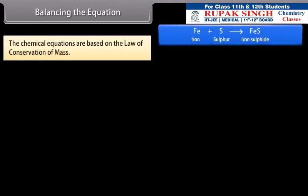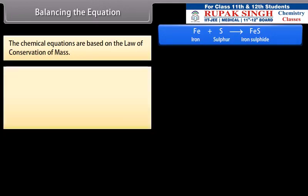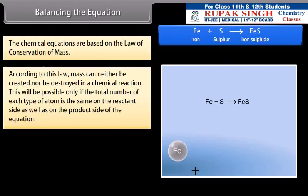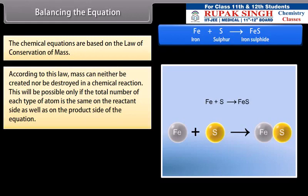Balancing the equation: The chemical equations are based on the law of conservation of mass. According to this law, mass can neither be created nor be destroyed in a chemical reaction. This will be possible only if the total number of each type of atom is the same on the reactant side as well as on the product side of the equation.